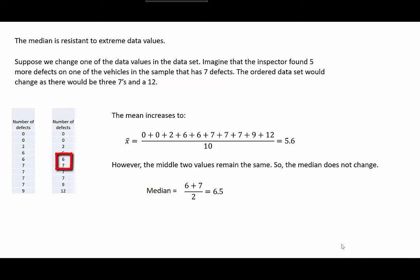However, the middle two values remain the same, so the median does not change. We would still calculate the median by finding the average of the middle two values which remain at 6 and 7, and the median remains at 6.5.